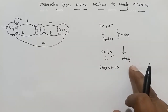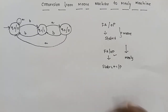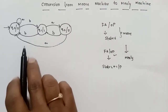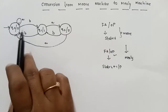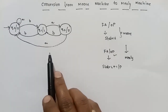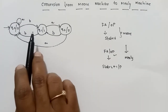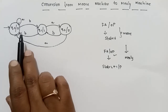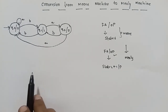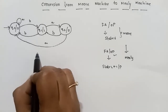This particular example is a Moore machine with states, outputs, and transitions. The input alphabet is a and b, and the output alphabet is 0 and 1. We will convert this Moore machine to a Mealy machine.